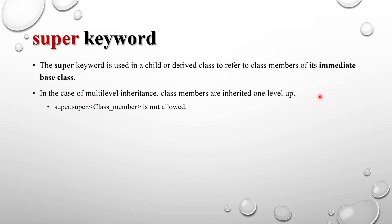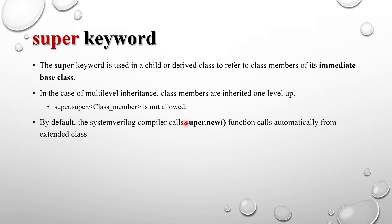In multi-level inheritance, one class is extended and then that derived class is extended further. If you have two derived classes and one parent class, you cannot use super.super.method to access the first parent's method — only super.method is allowed. Class members are inherited only one level up.